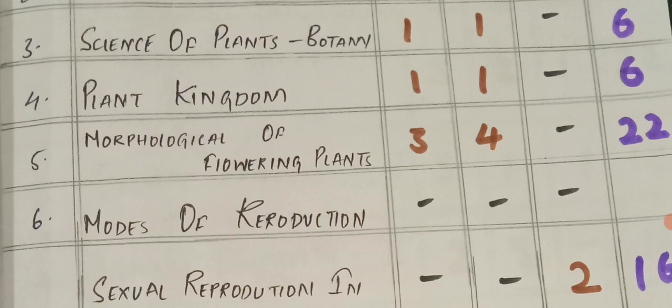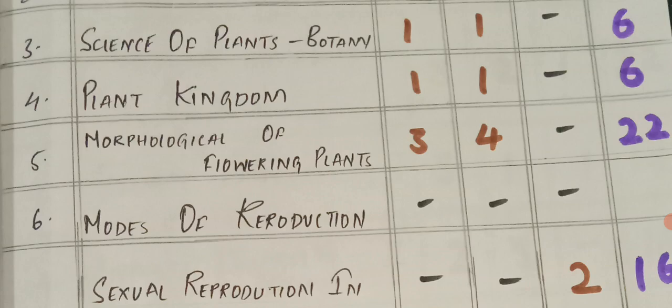Morphology, the 5th chapter, very important chapter with high weightage this year. 3 VSCQs and 4 SCQs from this chapter.